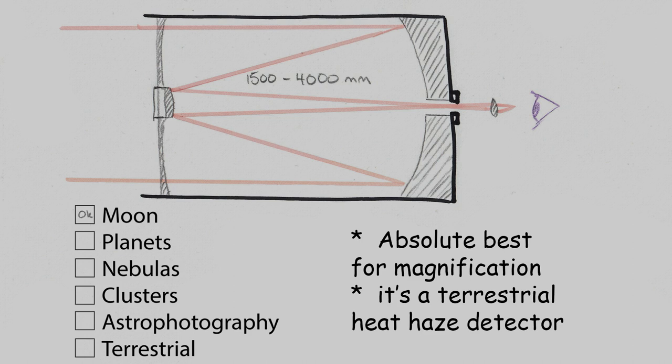They're good for the Moon, but only if you want individual craters. They're just about compulsory for planets, but only good for the smallest nebulas and galaxies. They can be good for the smallest star clusters as well. For astrophotography they can also be good, but guiding them can be a major challenge. If you want a scope for terrestrial viewing, look somewhere else. All you're going to see is heat haze with a Cassegrain.